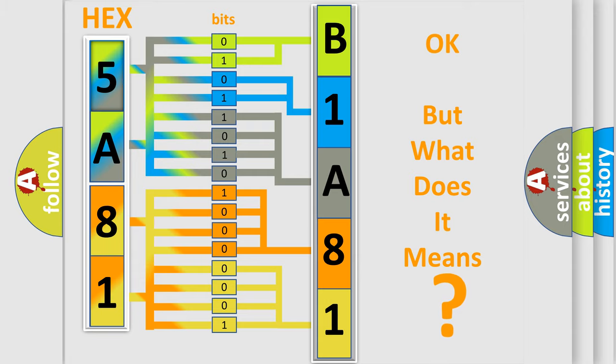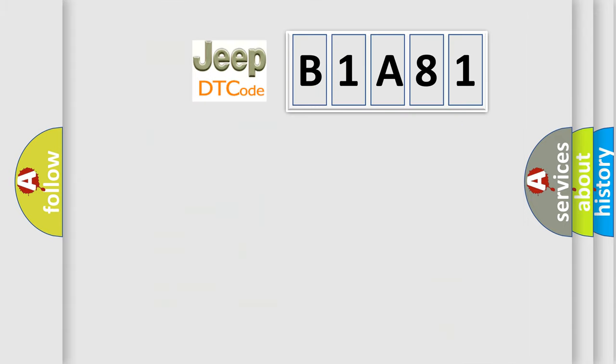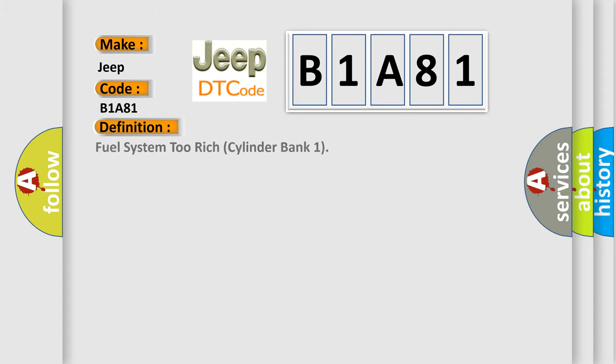So, what does the diagnostic trouble code B1A81 interpret specifically for Jeep car manufacturers? The basic definition is: Fuel System 2 Rich Cylinder Bank 1.